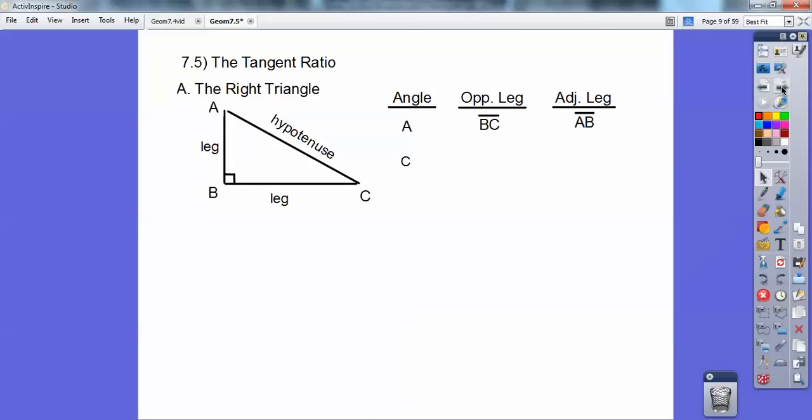Let's talk about angle C. It goes straight across from angle C. That would be the opposite leg. Here's the opposite leg, so it goes AB. And then the adjacent leg would be BC.